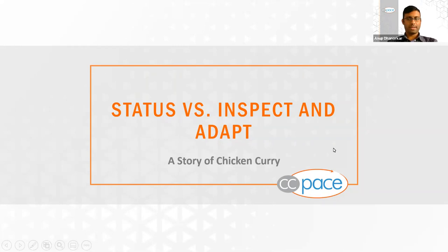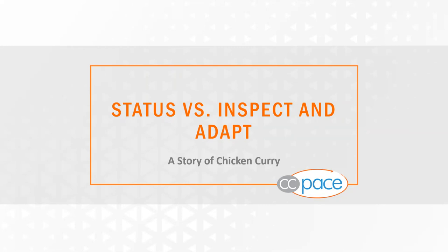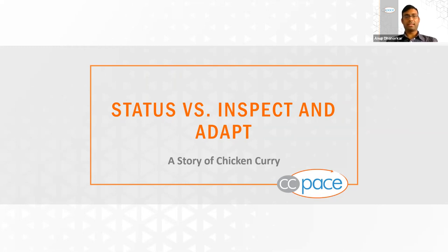Thank you so much, Koen. Welcome, everyone. Thank you to the Access Agile organizers for having this amazing festival, bringing access to the knowledge and community of Agile across the world. Today's session is about status versus inspect and adapt — a story of chicken curry.